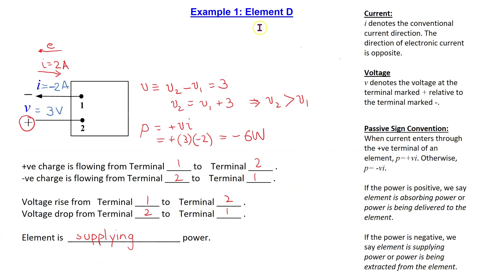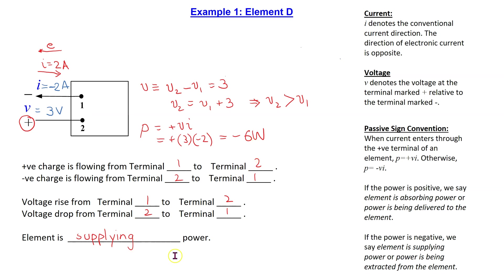Finally, let's look at circuit element D. For this circuit element, both the current value and direction and the voltage value and voltage polarity are reversed compared to circuit element A. Using similar procedure as before, we can establish the results for the current, the voltage, and the power, and these results are shown here. We can see that circuit element D is also supplying 6 watts of power.